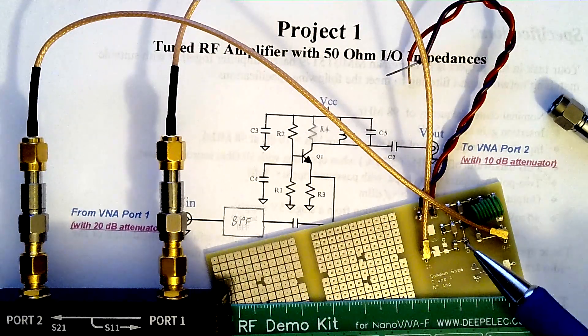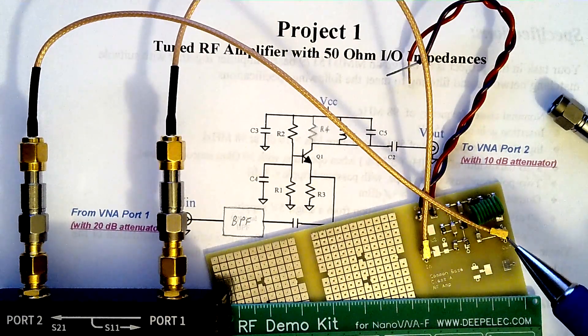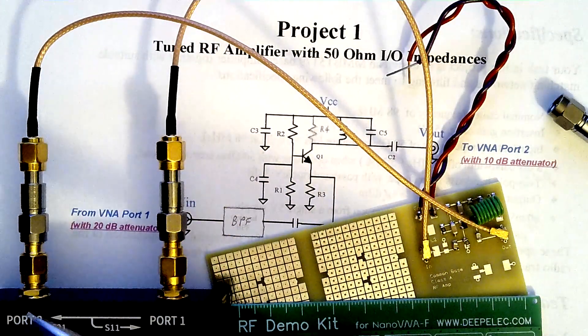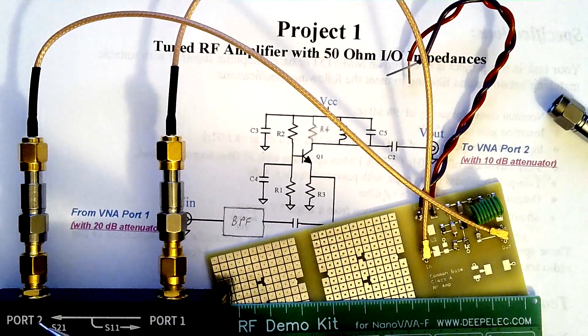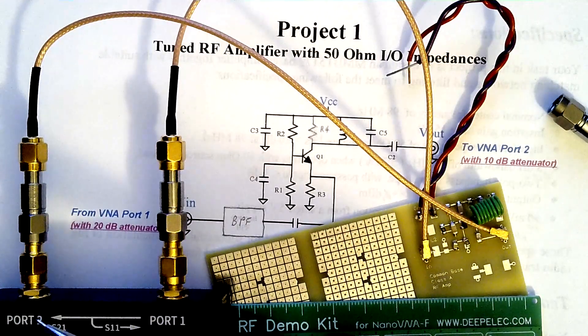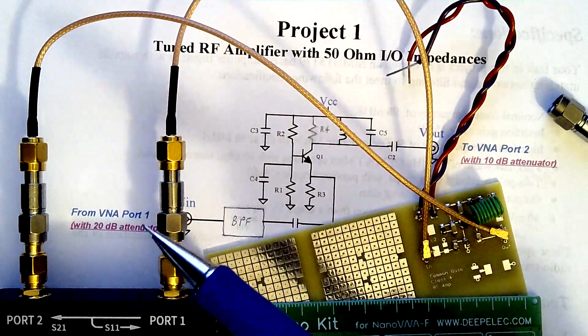More importantly, if the amplifier has any significant output power, its output power could come back into your Nano VNA and destroy the input circuits, which basically renders your Nano VNA dead. So attenuators are critical.